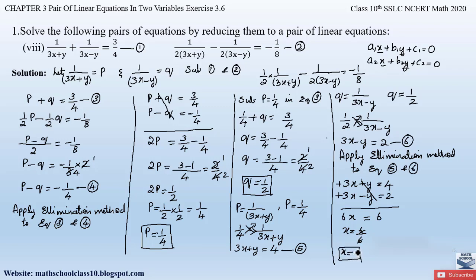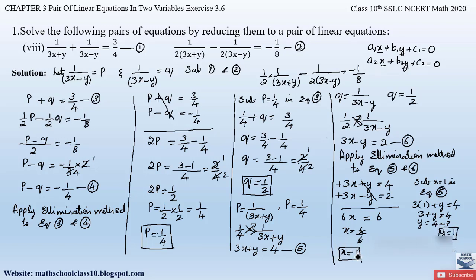Substitute x = 1 into equation 5: 3(1) + y = 4, so 3 + y = 4, giving y = 4 − 3 = 1. Therefore x = 1 and y = 1 is the solution for the given pair of equations.